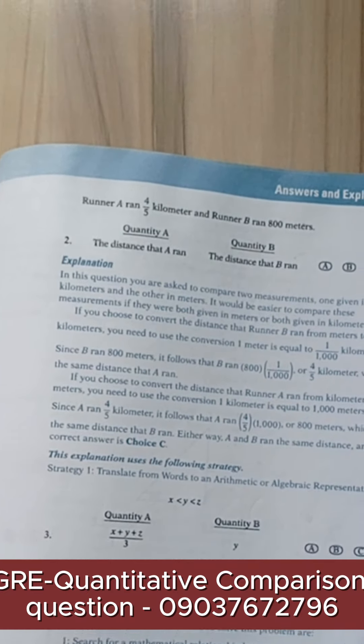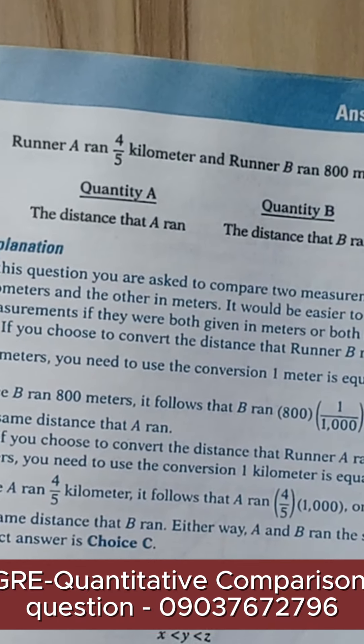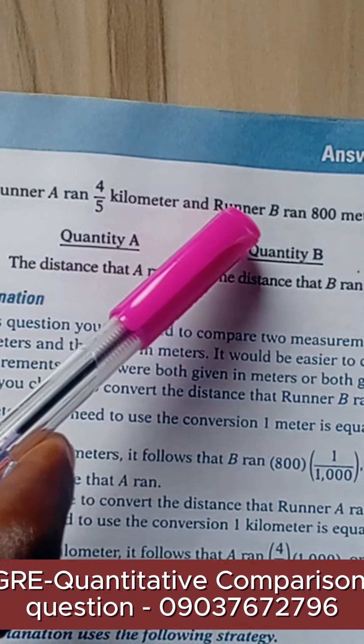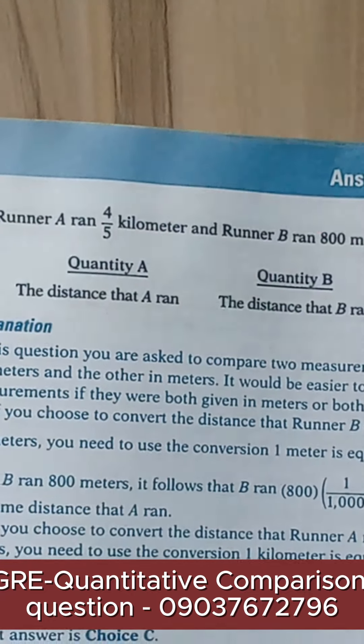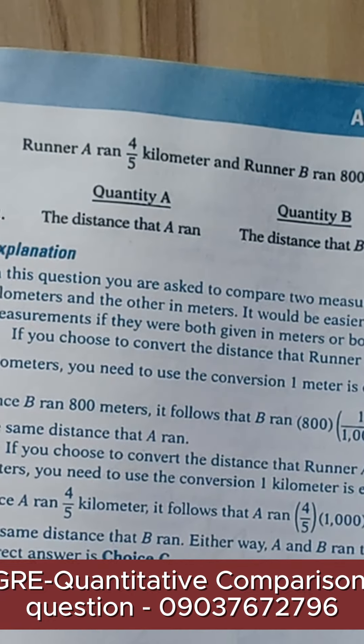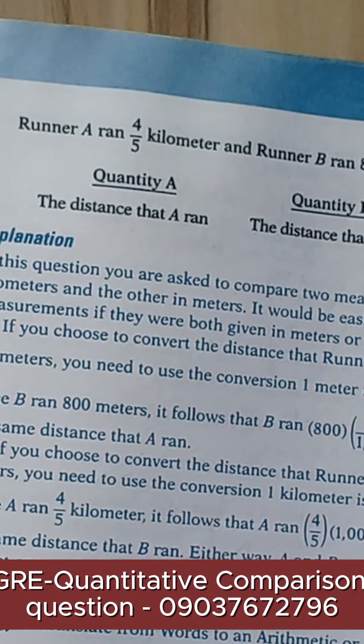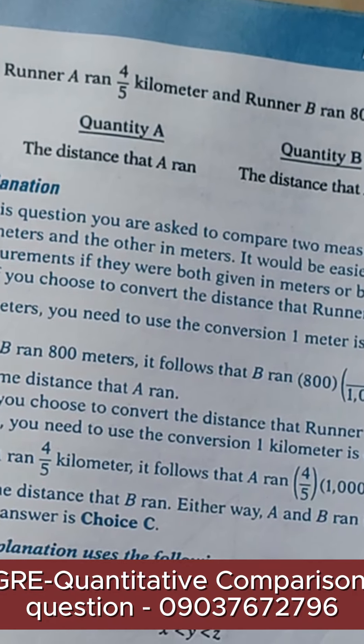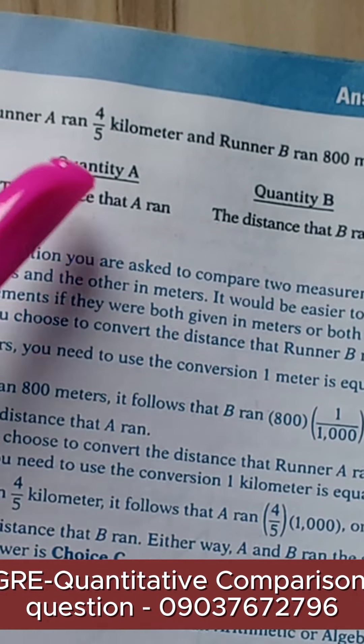Runner A ran 4/5 kilometer and Runner B ran 800 meters. Remember I told you that we can have the certain information given for us to be able to use to compare quantities.